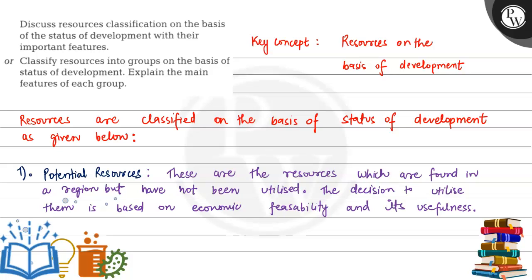Let's see this question. This question says: discuss resource classification on the basis of status of development with their important features, or classify resources into groups on the basis of status of development and explain the main features of each group.